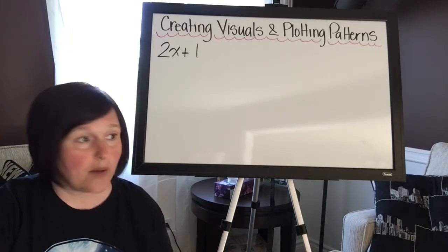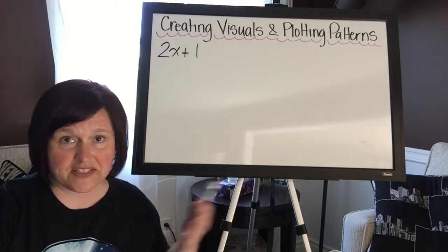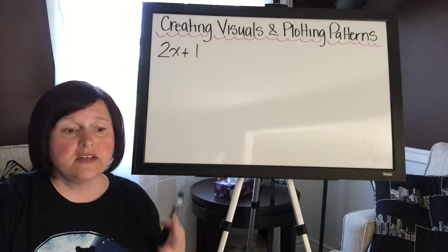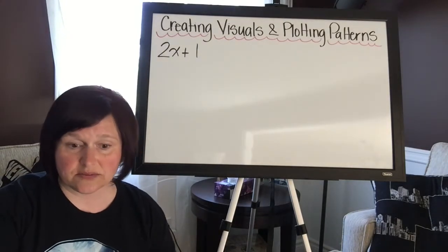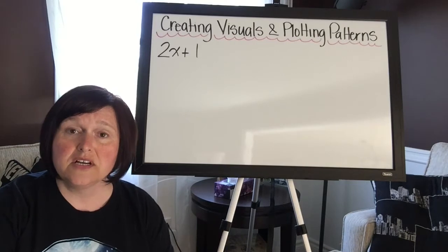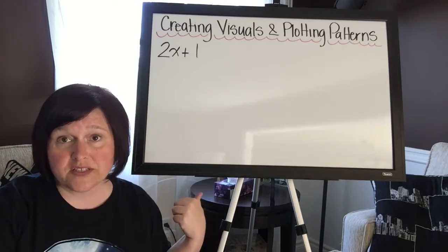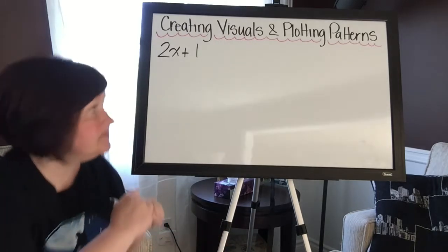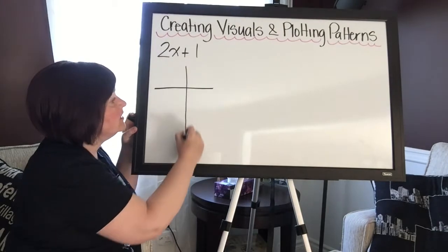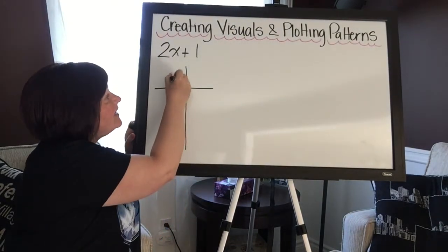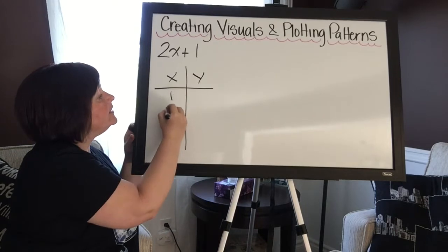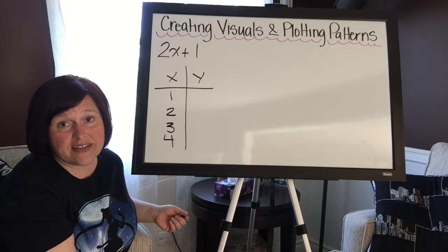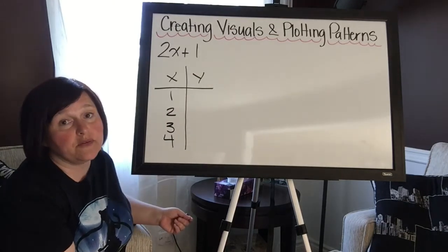So I've taken the most popular algebraic expression that you have seen a billion times so far this year: 2x plus 1. So imagine I asked you to create a visual that shows four term numbers for this pattern. Now the first thing that you need to do is do a table of values for yourself. So of course you've got x and you've got y, and you've got one, two, three, four. Please make sure that all of your patterns have four term numbers. Now let's figure out the term value.